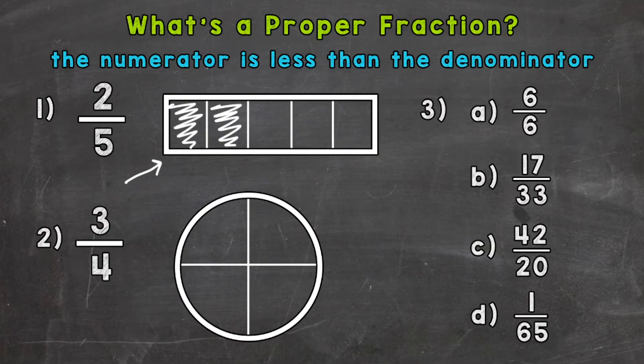On to number two, where we have three-fourths. So again, our numerator is less than the denominator, and this represents a value less than a whole, so we have a proper fraction. So let's model this.